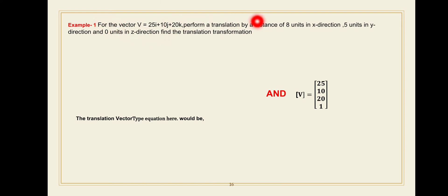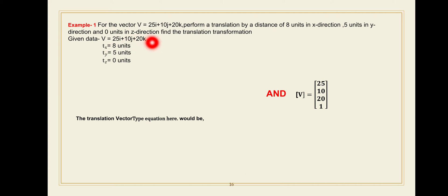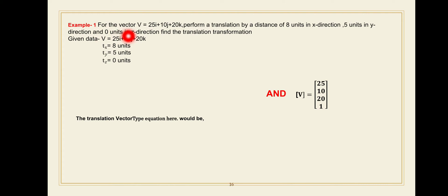The first step is to write down the given data. The value of v is given: v equals 25i plus 10j plus 20k. Three translation factors are given. Translation by distance of 8 units in x direction means tx equals 8 units. 5 units in y direction means ty equals 5. And 0 units in z direction means tz equals 0.